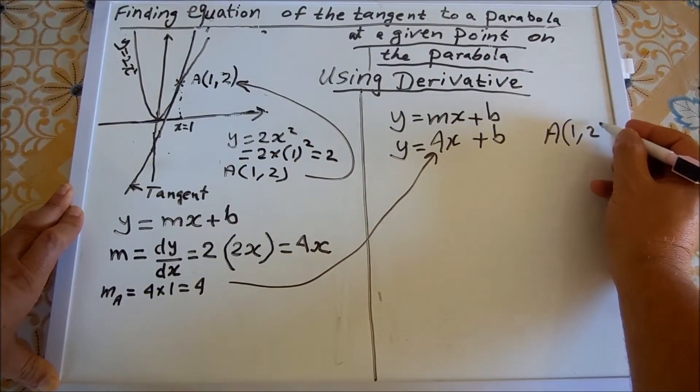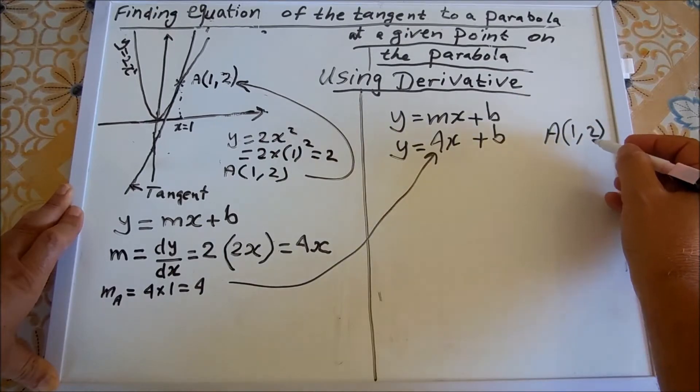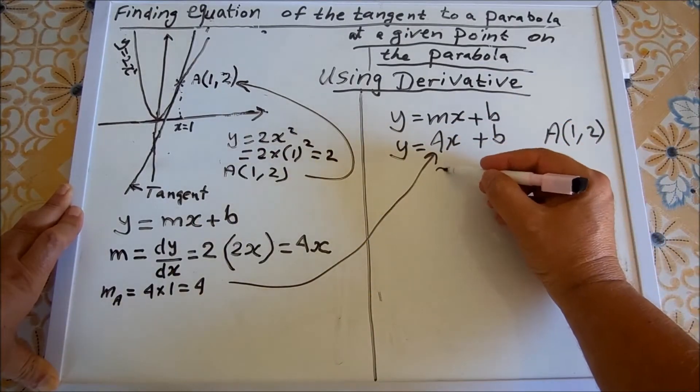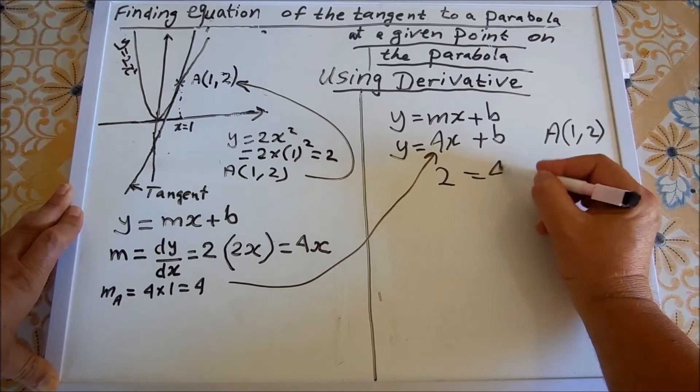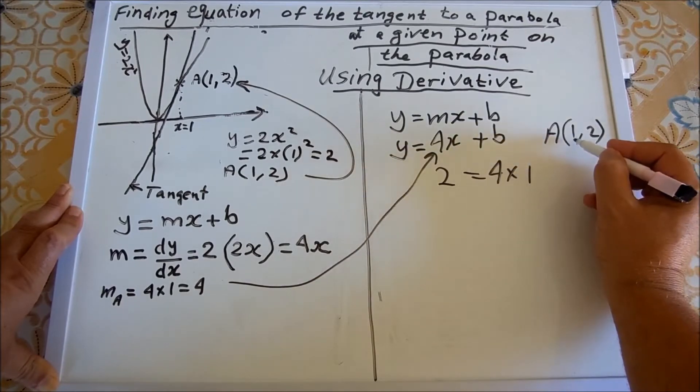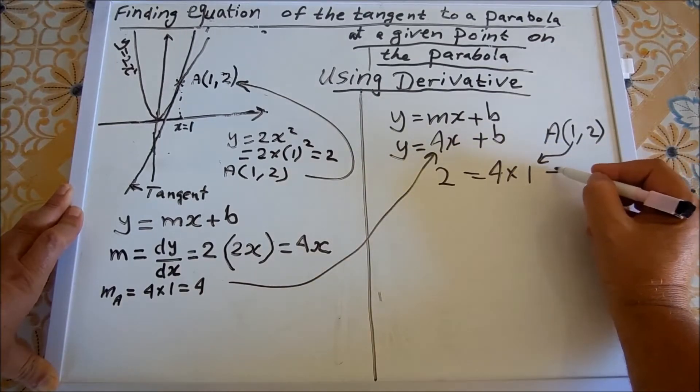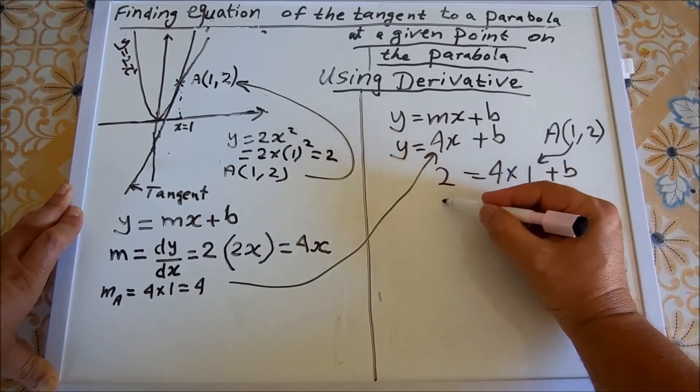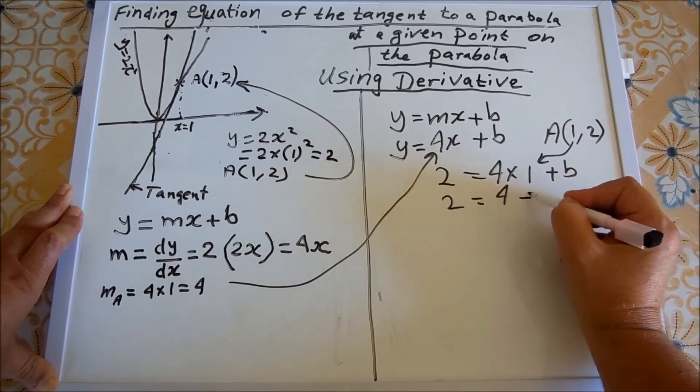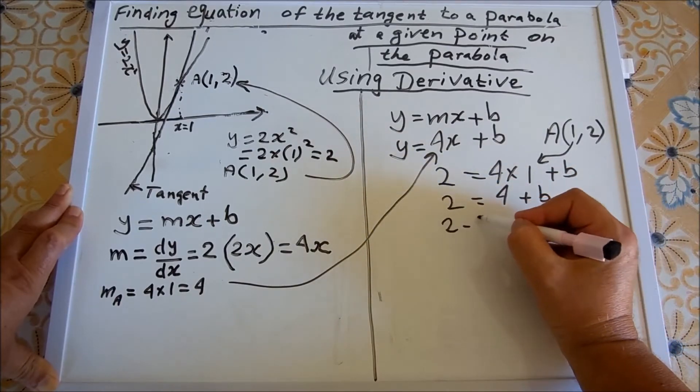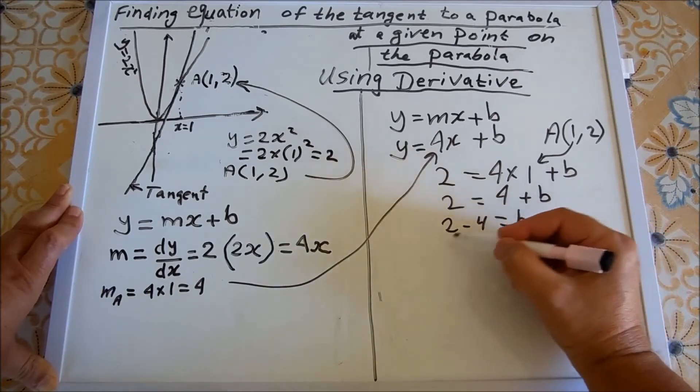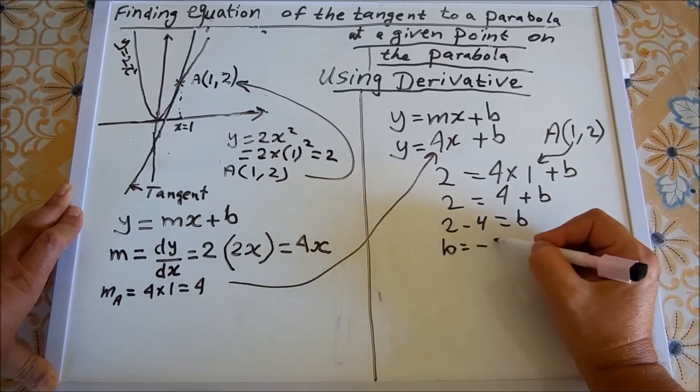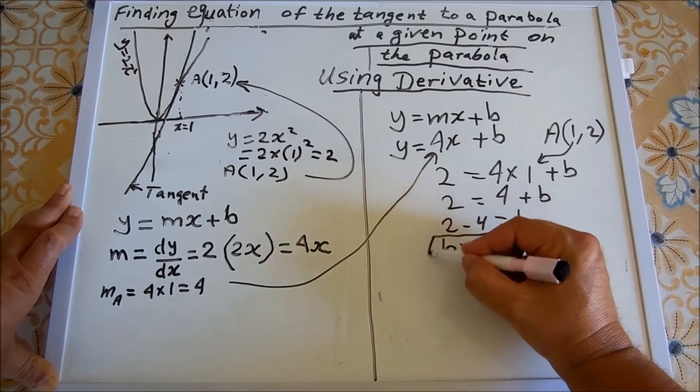Since point A is (1, 2), we sub y equals 2, so 2 equals 4 times 1 plus b. Rearrange and simplify: 2 equals 4 plus b, 2 minus 4 equals b, and that means b equals -2.